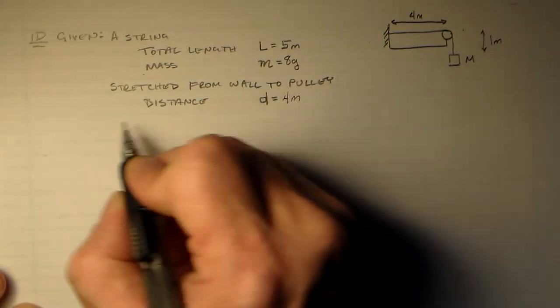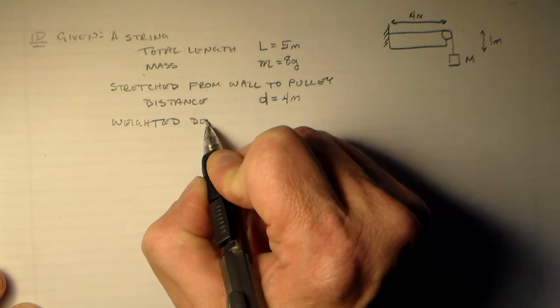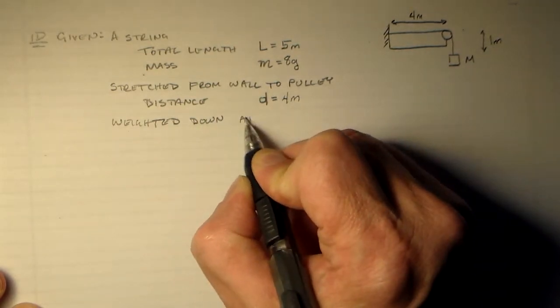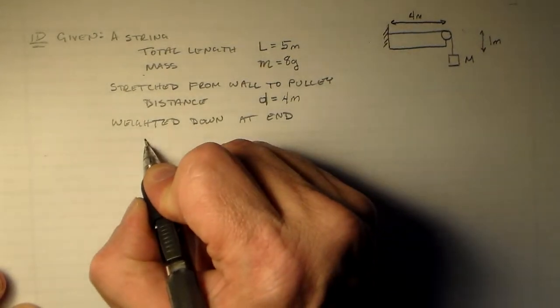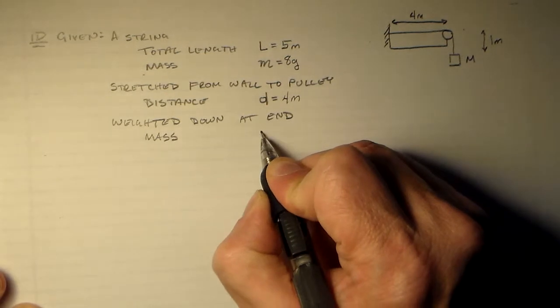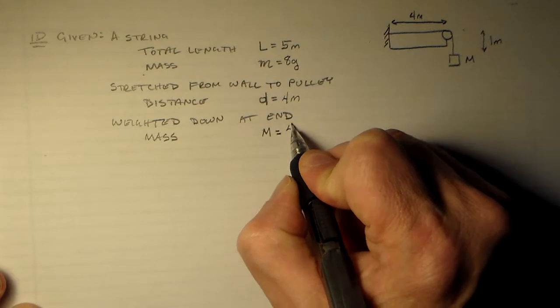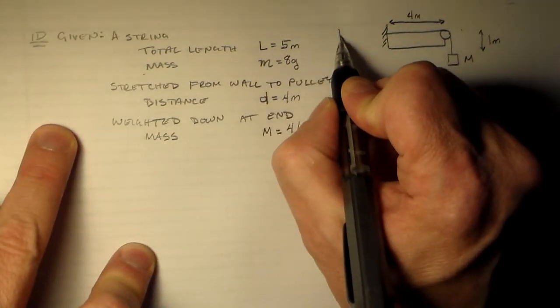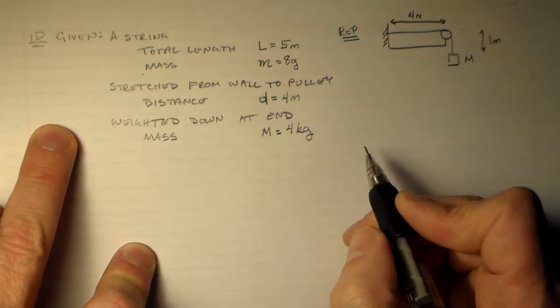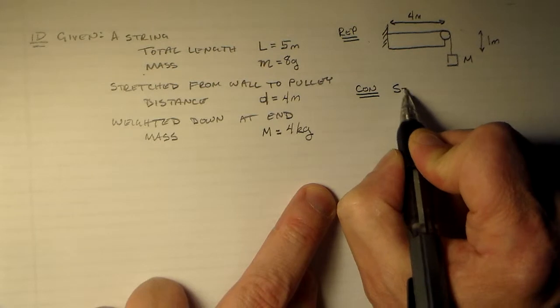And on top of that it's had a weight. So it's been weighted down at the end. And that weight is, or that mass, the mass of that weight is big M is equal to 4 kilograms. So that was our ID. This is our representation. Our concept will be the standing waves on a string.